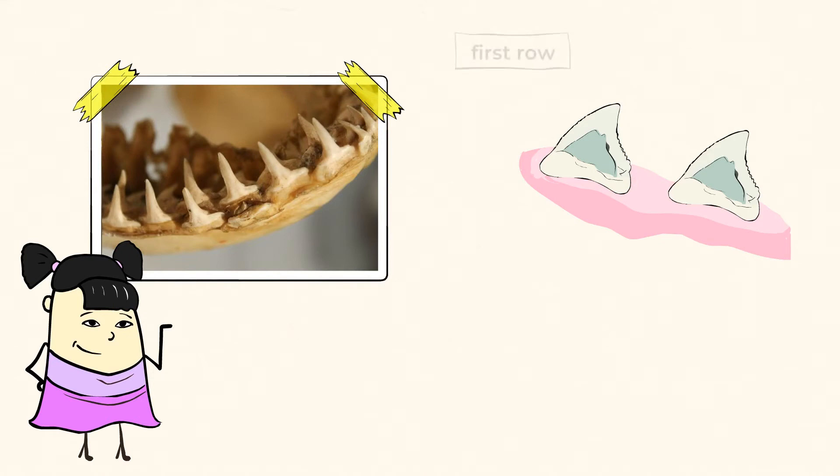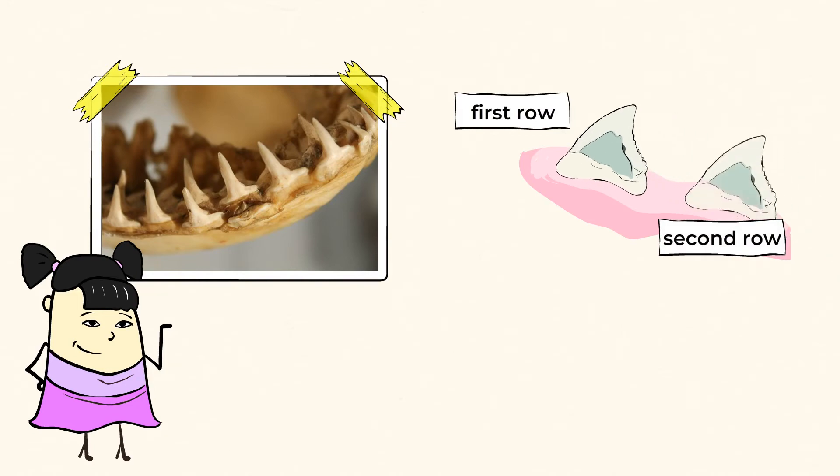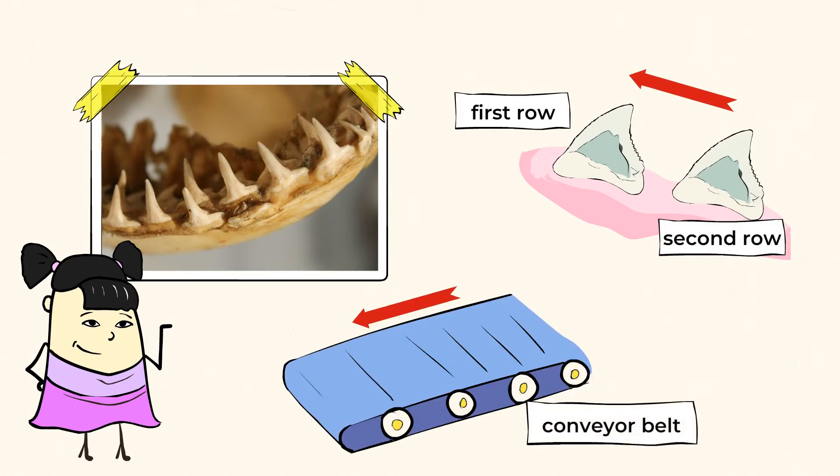Instead, when a shark loses a tooth on the outside row of its mouth, the tooth right behind it will move forward to fill in the hole where the tooth used to be. It works kind of like a conveyor belt. And the soft surrounding material in the shark's mouth, called tissue, carries the tooth forward to make sure the shark has all the teeth possible to catch and eat its prey.